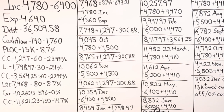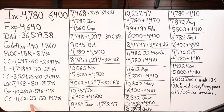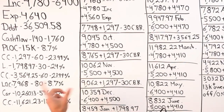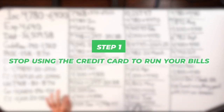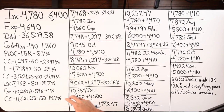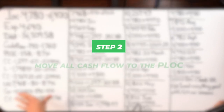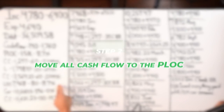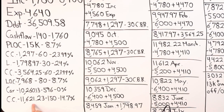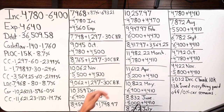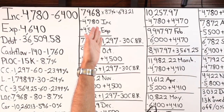To course correct, the first step is to stop using the credit card to run bills. Then move all income and cash flow to the PLOC — it's at a lower rate and it's a better debt tool where you can dump all your income in. They can't dump all their income into the credit card, but they can with the PLOC. So the second step is to move all income into the line of credit, starting in October 2022.